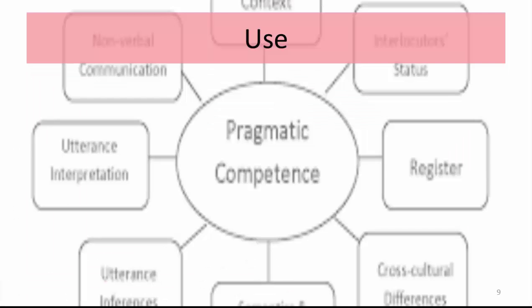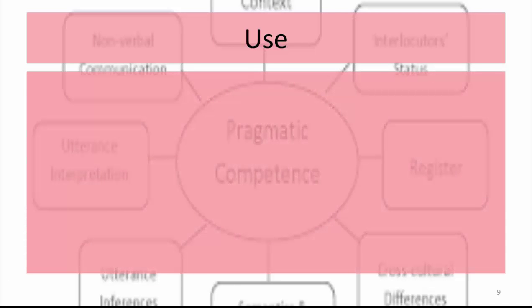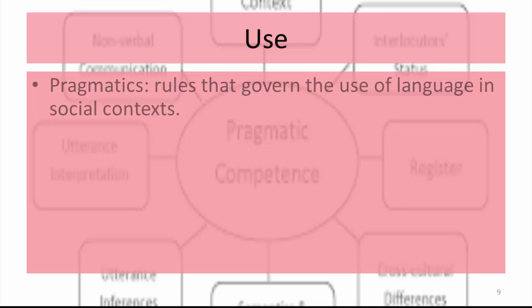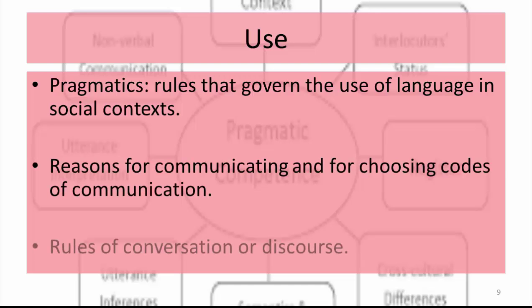Use is the last language area in this model. The linguistic domain in this case is pragmatics. Pragmatics is a system that combines form and content in functionally and socially appropriate communication. This domain is concerned with the functions of communication, the way we communicate, and the rules of conversation and discourse. Discourse refers to the connected flow of language between two or more individuals. This includes dialogues such as conversations, and monologues such as narratives and explanations.